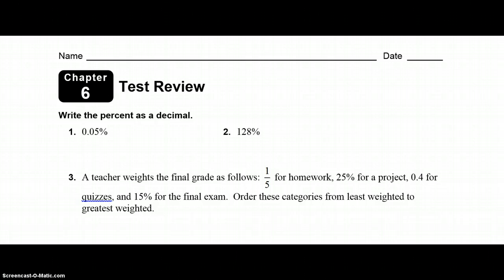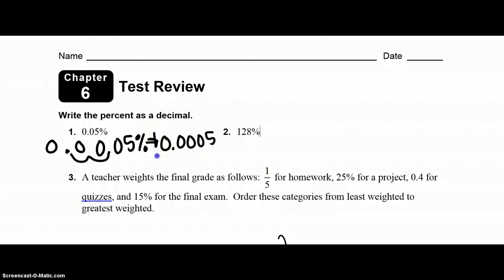Number one, we need to write the percents as decimals. When you have a percent, you need to swoop two away from the percent sign. So when I'm rewriting this, it's 0.0005 would be your decimal. 128%, same thing, swoop once, swoop twice, and this is 1.28.